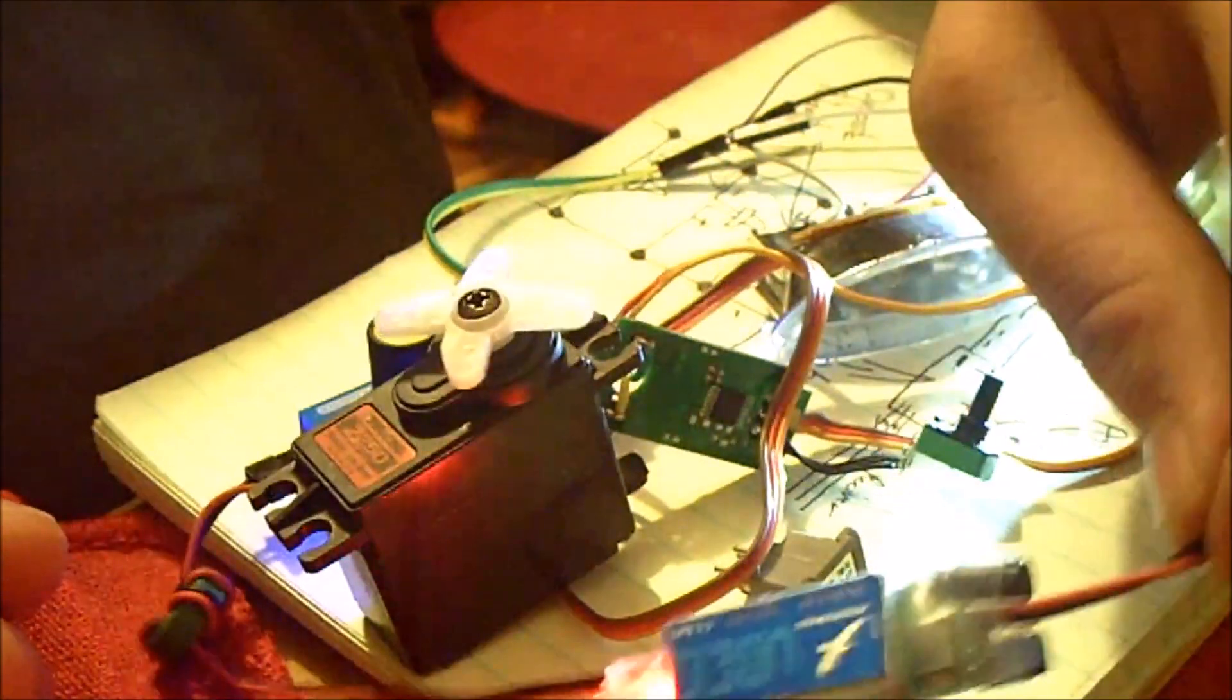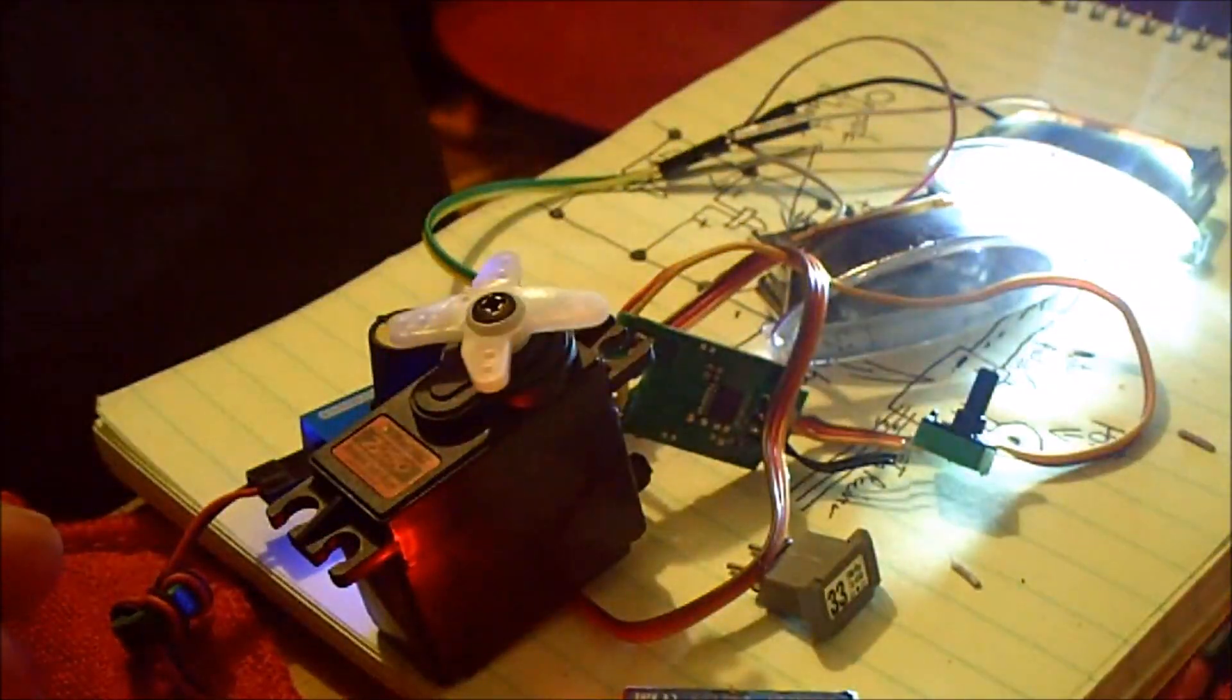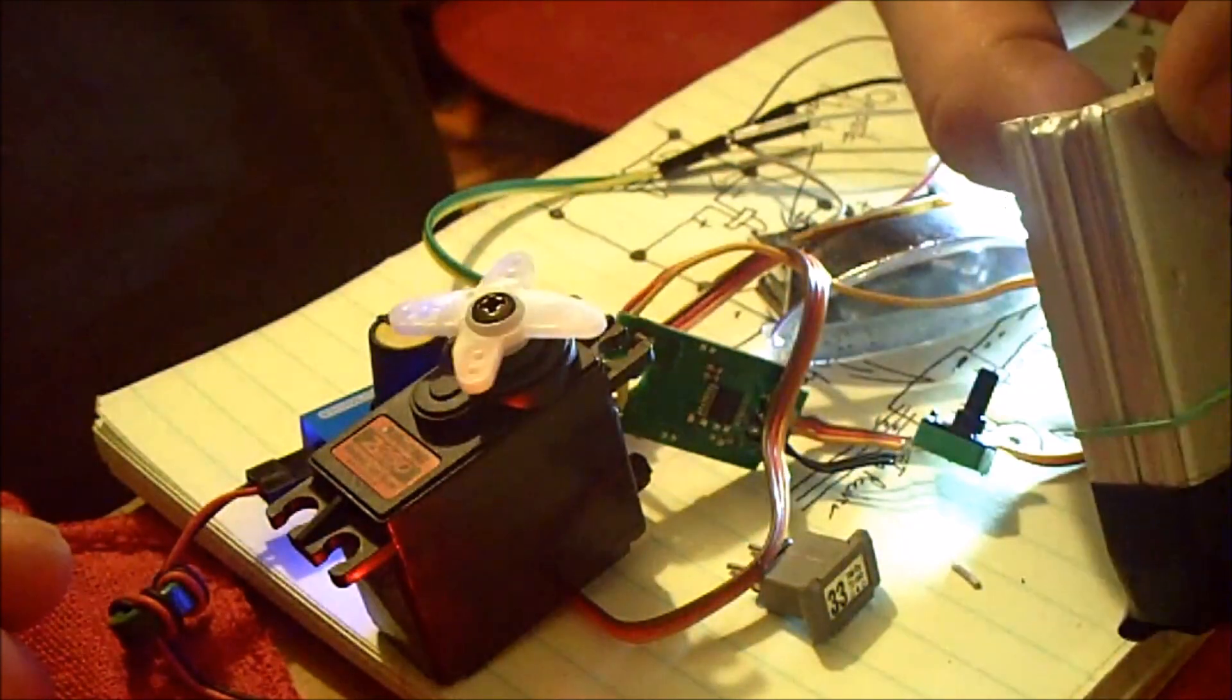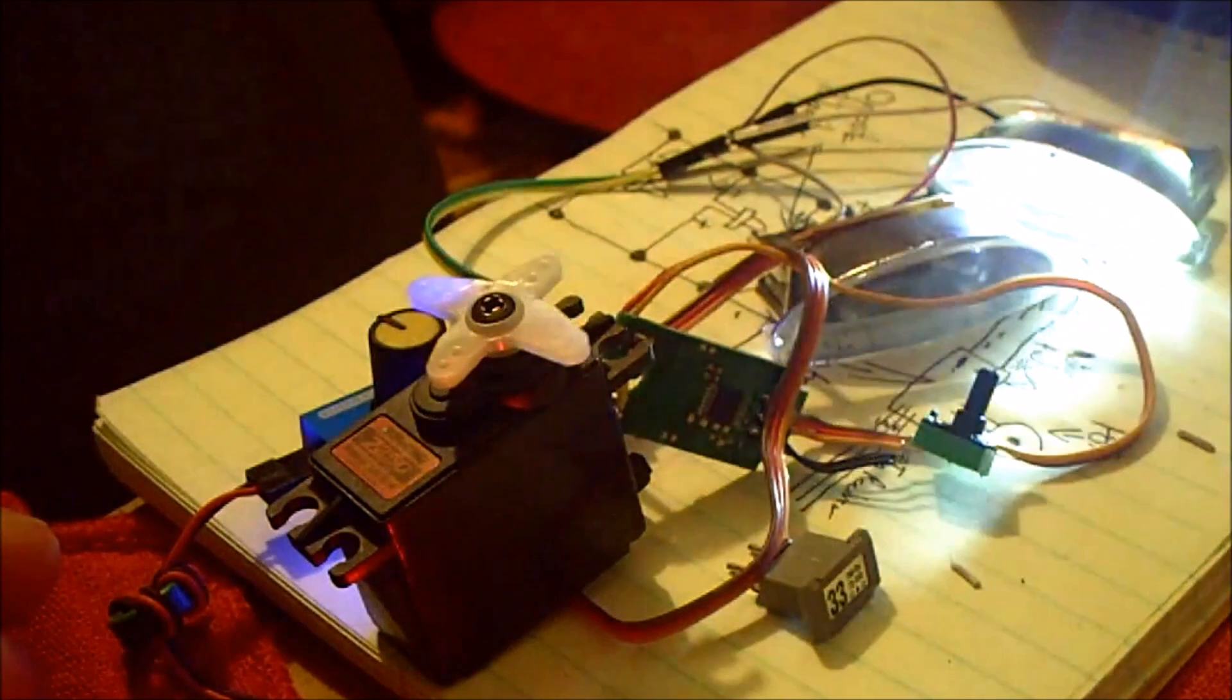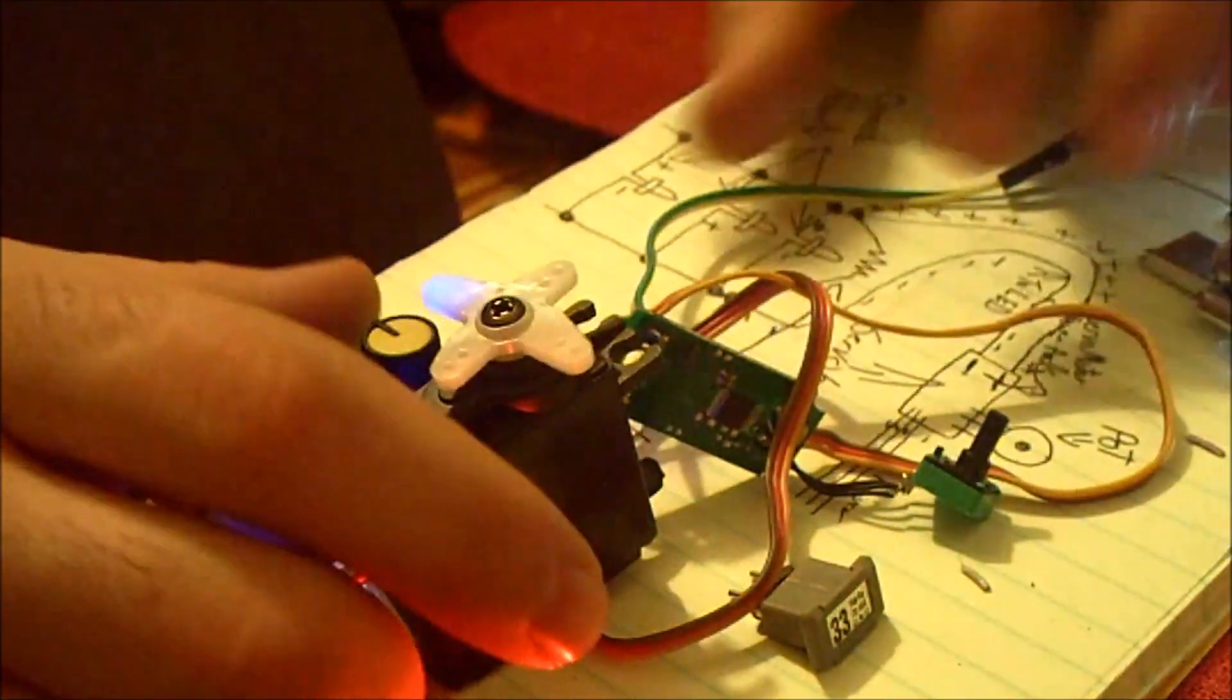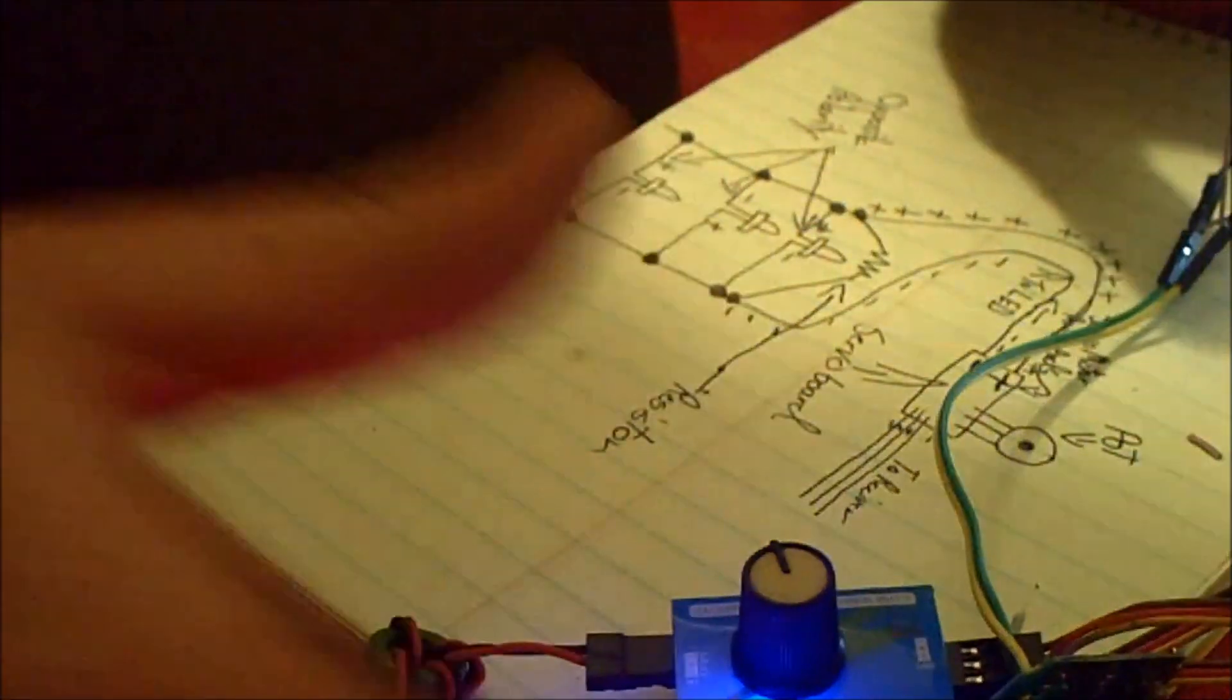Right now I'm running it off of a 5-volt BEC to a 1300 milliamp hour 2S that used to be a 3S but a cell died so I made it 2S. Here's a little kind of a drawing of the schematic so you guys can see.